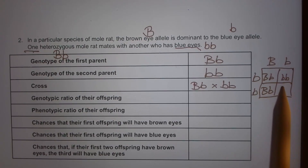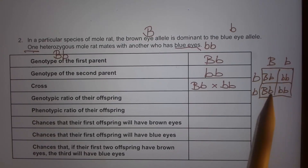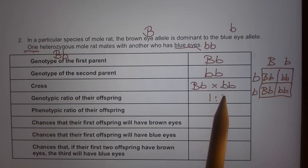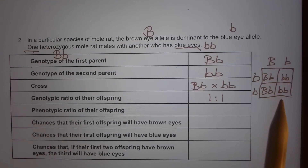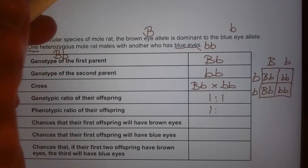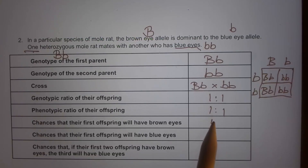Filling out the Punnett square, the genotypic ratio of their offspring is one heterozygous to one homozygous recessive, simplified to 1:1. The phenotypic ratio is also 1:1 — either brown eye or blue eye. The chance that their first offspring will have brown eyes is 50%.